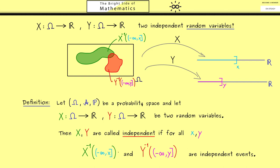In other words, these two events now should be independent. Indeed, this should hold no matter which lowercase x and lowercase y we choose. In other words, in the worst case, we have to check here infinitely many pairs. However, then this is the property that makes the two random variables as maps independent.